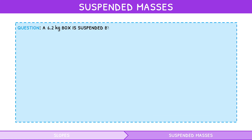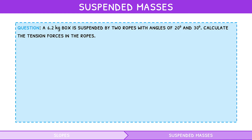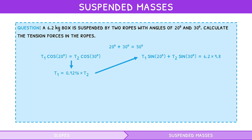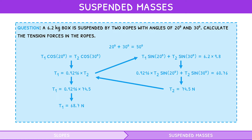Let's take a look at an example question. A 6.2 kilogram box is suspended by two ropes with angles of 20 degrees and 30 degrees. Calculate the tension forces in the ropes. Since 20 plus 30 equals 50 degrees, we must resolve the tension forces. So tension 1 times cosine 20 equals tension 2 times cosine 30, and tension 1 times sine 20 plus tension 2 times sine 30 equals weight. Rearranging the first equation to isolate tension 1 and substituting into the second gives tension 2 equal to 74.5 newtons. Plugging back in gives tension 1 of 68.7 newtons. The final answer is 69 newtons and 75 newtons.